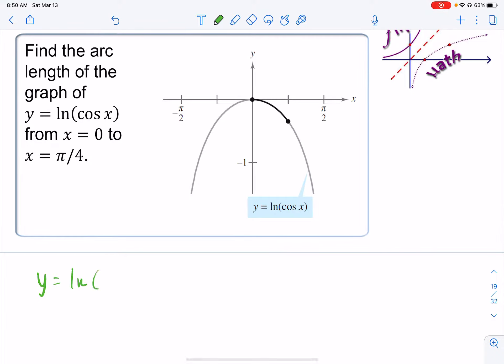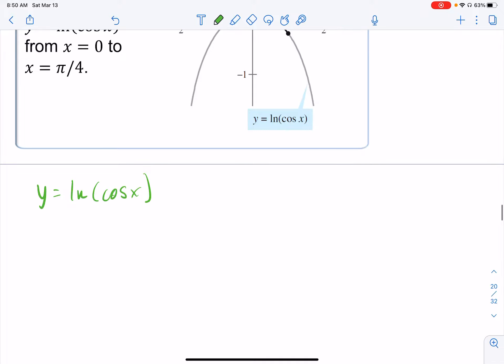y is equal to the natural log of cosine x. So the derivative is u prime over u, where u is our interior function. So that derivative is going to be negative sine over cosine. You could leave it like that, but I'm not gonna. I'm going to turn that into a negative tangent x.